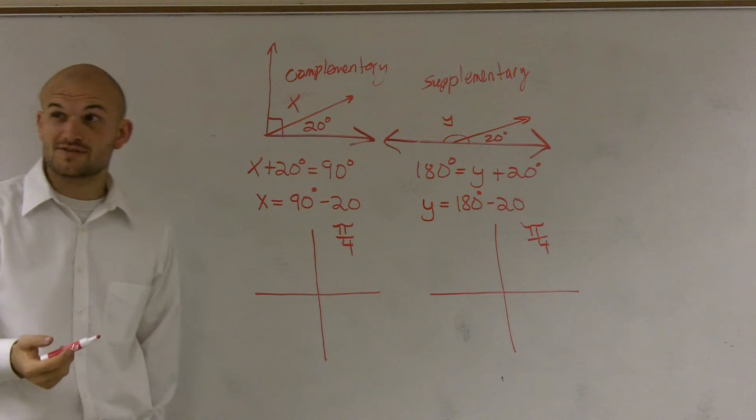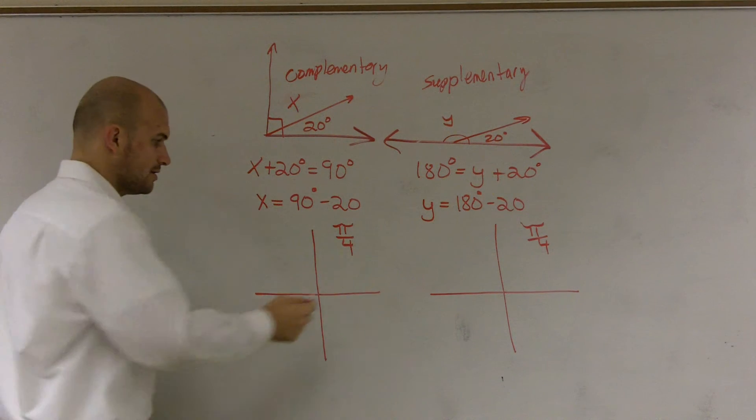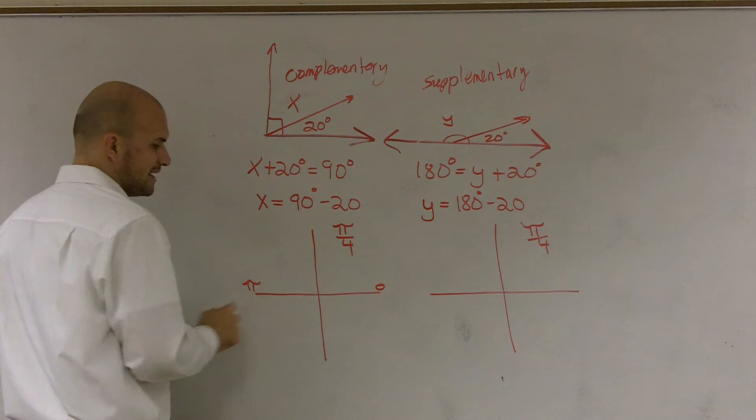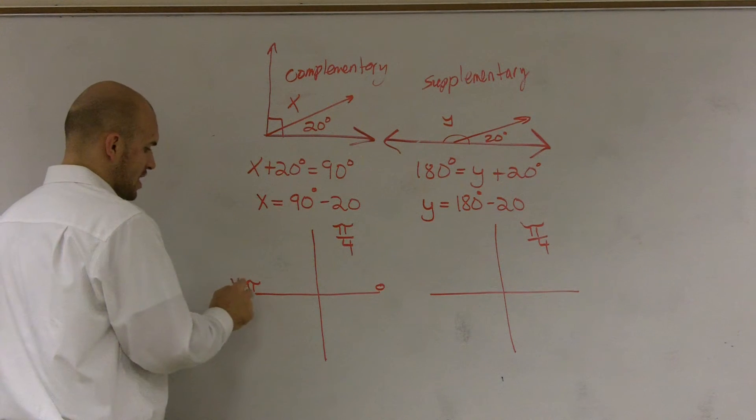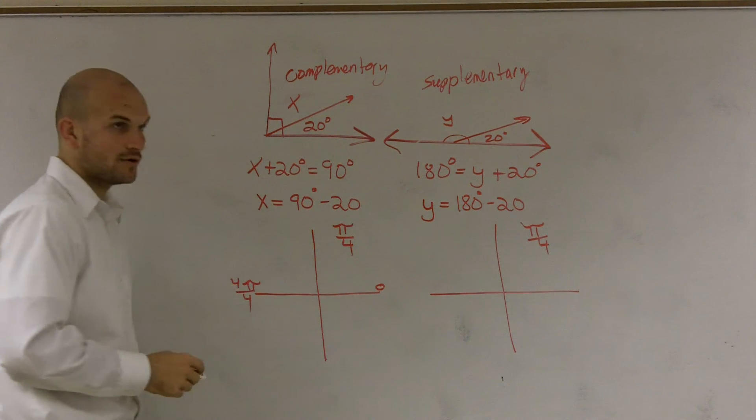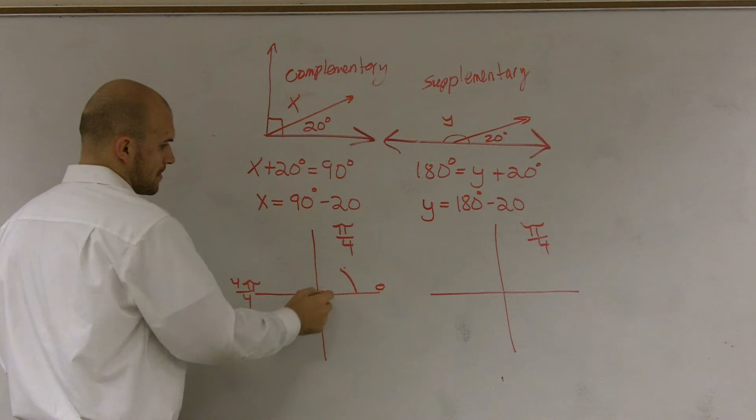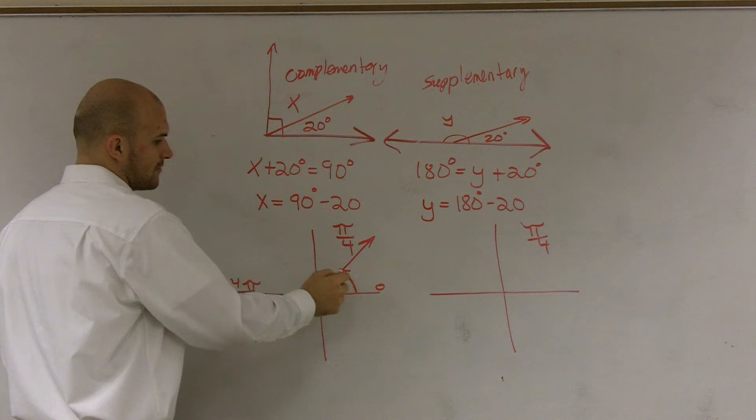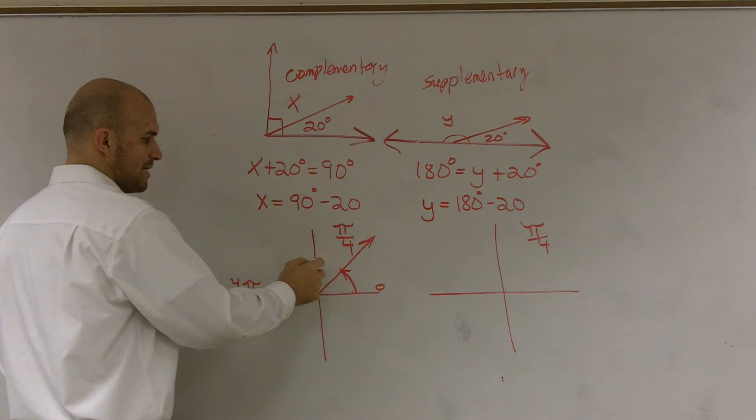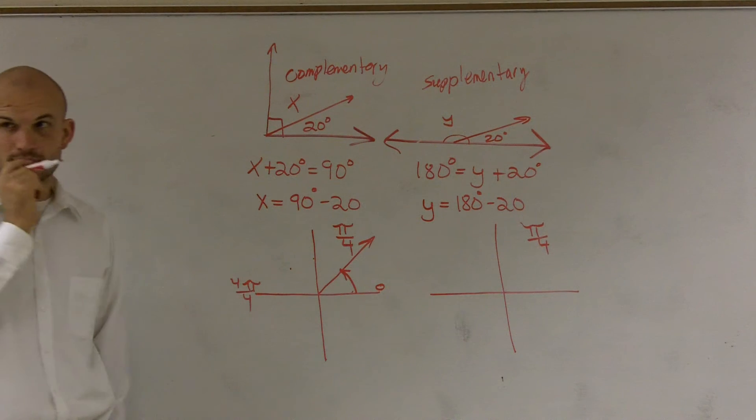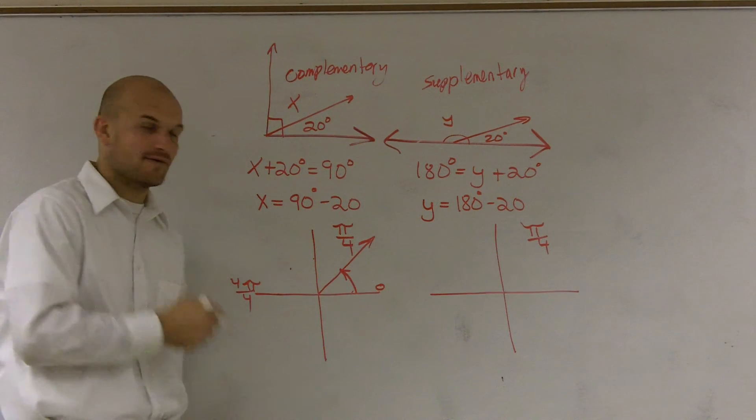So if I have pi over 4, first of all we need to remember where is pi over 4. Well, if I started my initial side, what you get over here would be pi, which would be also 4 over 4. So therefore I could say that would be pi over 4, because 1 pi over 4, 2 pi over 4, 3 pi over 4, 4 pi over 4. So my angle pi over 4 is right here.